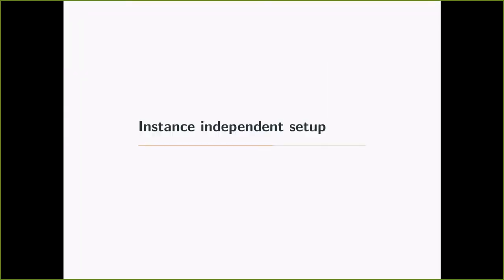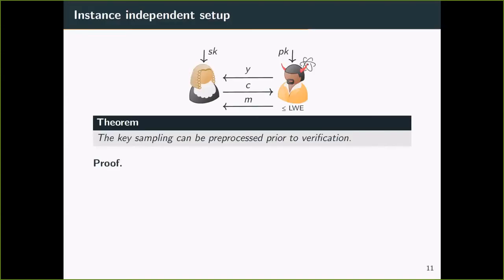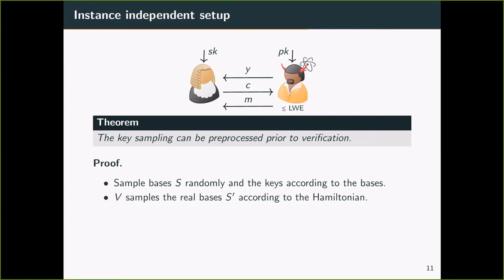Finally, I will also show you how we turn the protocol into a non-interactive classical zero-knowledge for BQP or QMA. The first step is to show that the key generation can be done before the verification starts, i.e. before they receive the instance. The idea is simple. First, we sample basis randomly, and then sample the keys according to a random basis. After receiving the instance, the verifier samples the real basis according to the Hamiltonian. If they don't match, the verifier accepts. Otherwise, they run the same verification procedure as before.